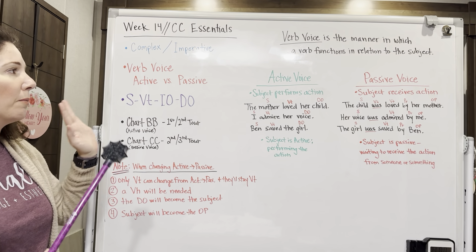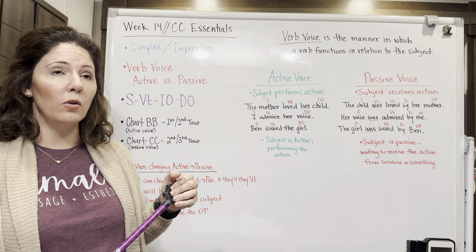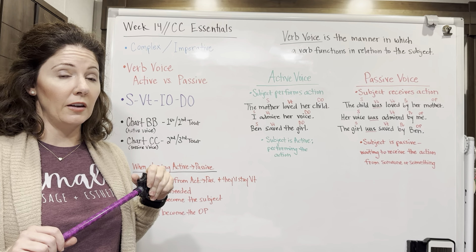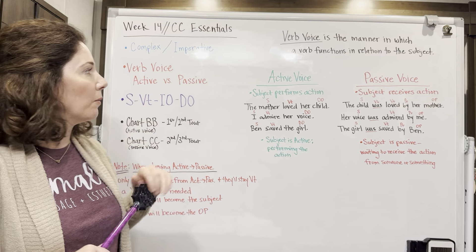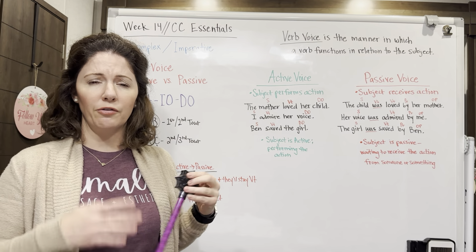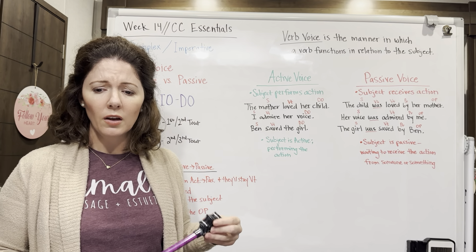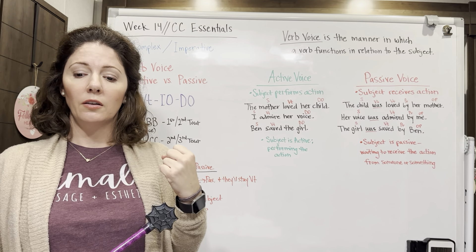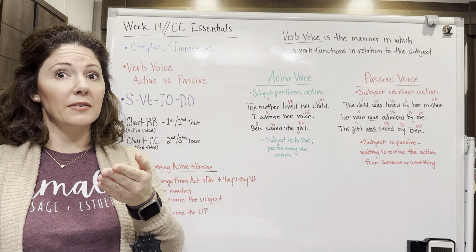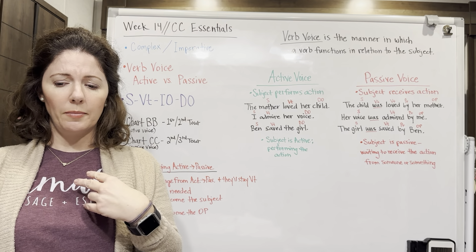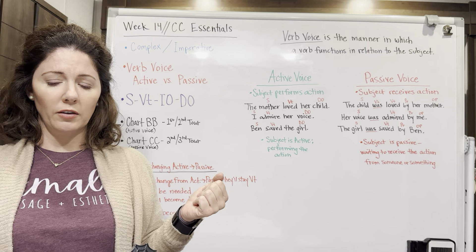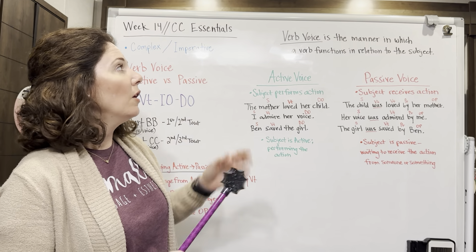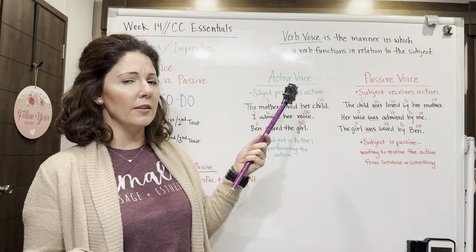We're going to start with our verbs. It has been a while since we dove into verbs — that deep dive happened in week two. Verb voice is one of the four attributes of verbs. The attributes are number (singular or plural), person (first, second, or third), voice (active or passive), and mood (indicative, imperative, or subjunctive). Today we're looking at verb voice — the manner in which a verb functions in relation to the subject.